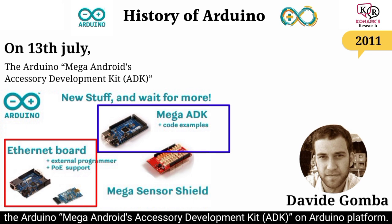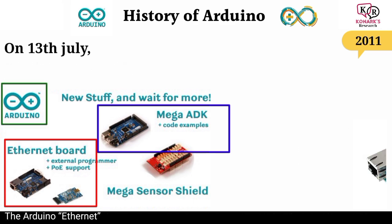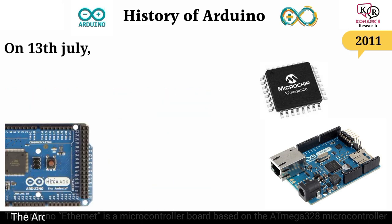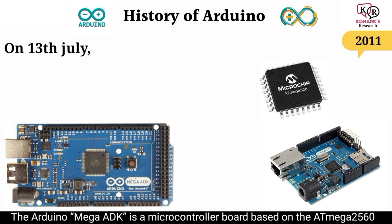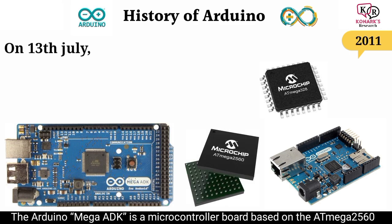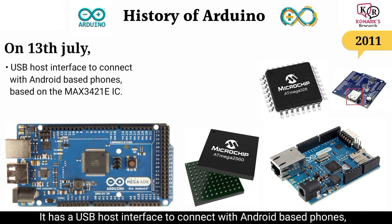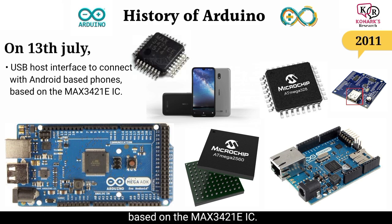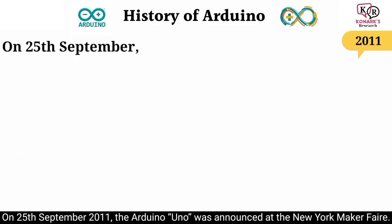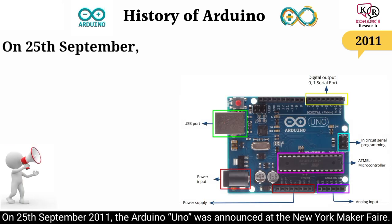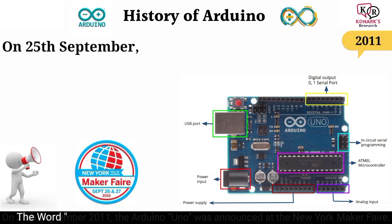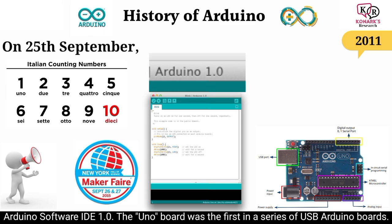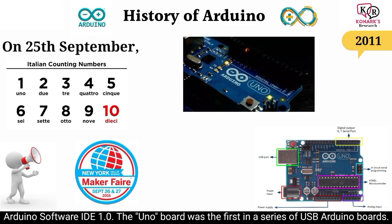On 13 July 2011, David Gamba posted about the Arduino Ethernet and the Arduino Mega Android Accessory Development Kit (ADK). The Arduino Ethernet is a microcontroller board based on the ATmega328. The Arduino Mega ADK is a microcontroller board based on the ATmega2560 and has a USB host interface to connect with Android-based phones, based on the MAX3421E IC. On 25 September 2011, the Arduino Uno was announced at the New York Maker Faire. The word 'Uno' means one in Italian and was chosen to mark the release of Arduino software IDE 1.0.